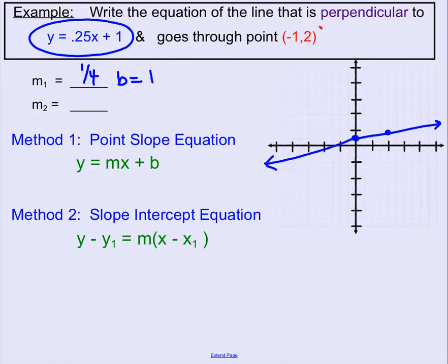Now we want to come up with a new equation that's perpendicular to this blue one and runs through the point negative 1 comma 2. So let's graph negative 1 comma 2. Left 1 and up 2.